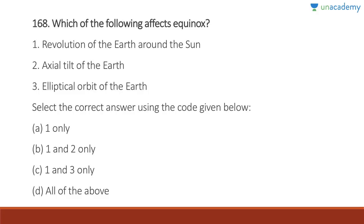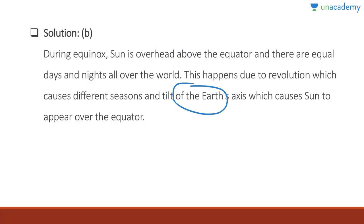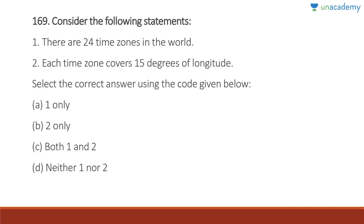Question 168: What effects equinox? Revolution of the Earth around the sun — yes. Axial tilt of the Earth — yes. Elliptical orbit of the Earth — this is wrong. Answer is one and two. During equinox, the sun is overhead above the equator with equal days and nights all over the world. This occurs due to revolution causing different seasons and the tilt of Earth's axis causing the sun to appear over the equator.